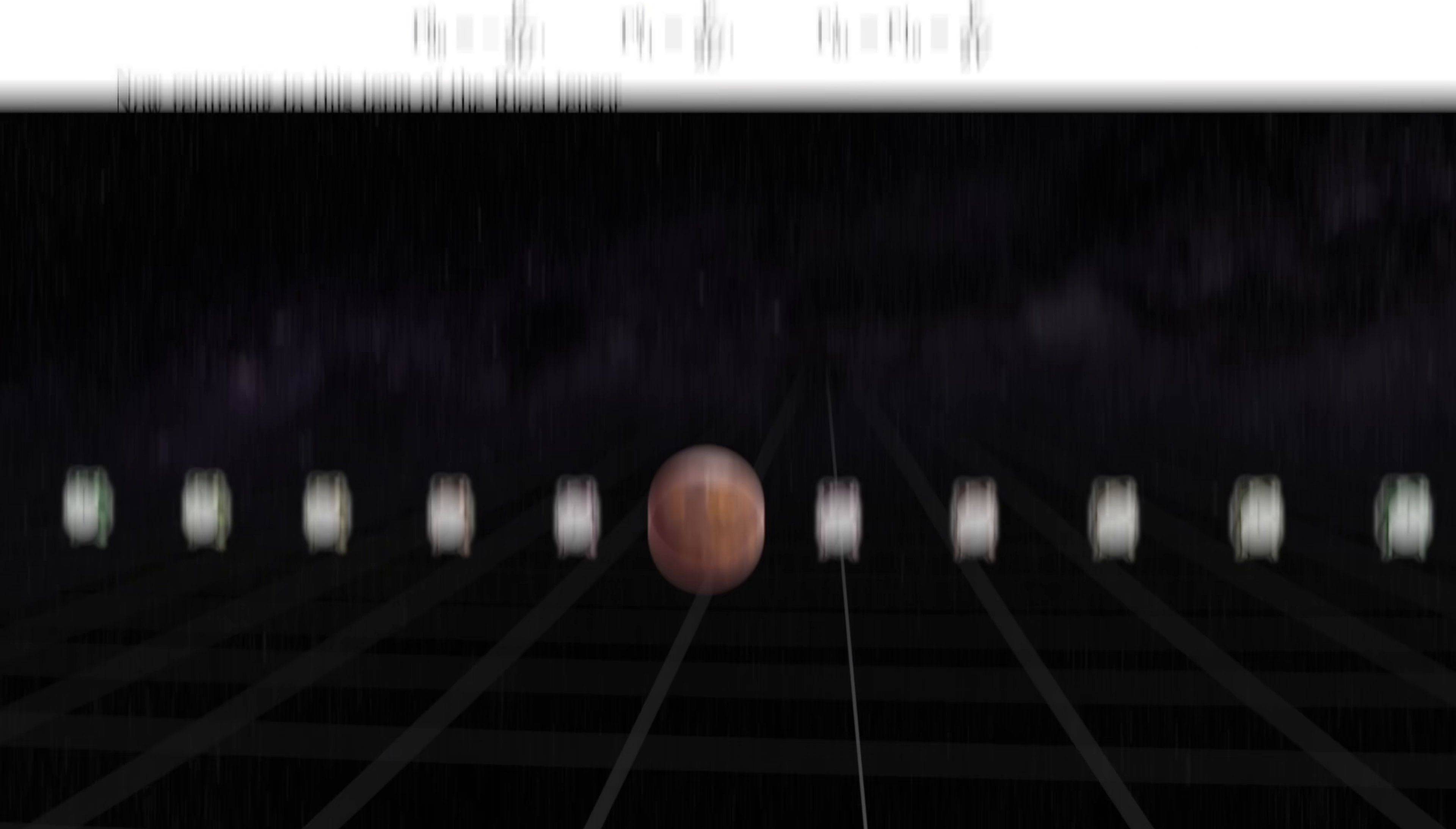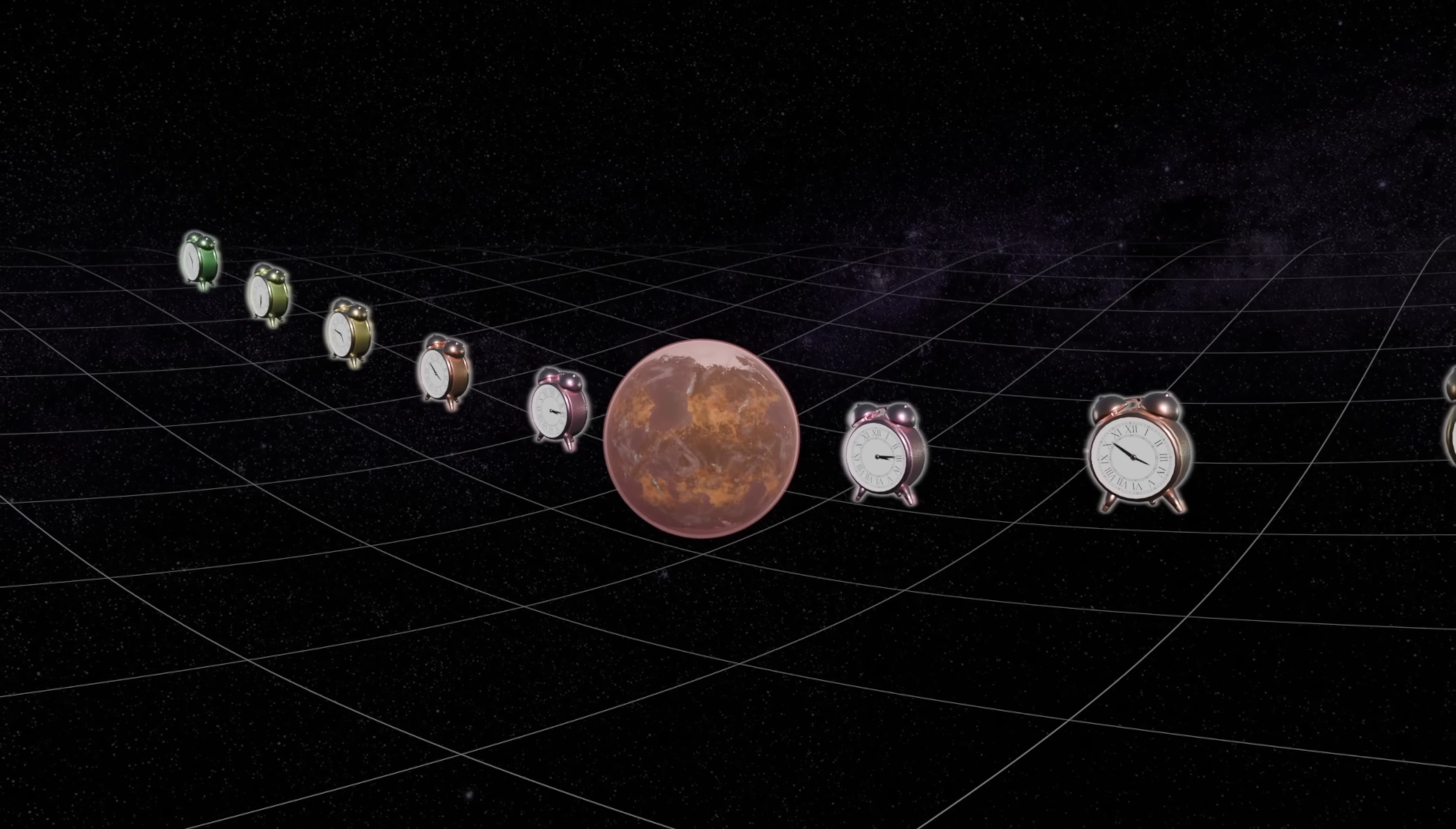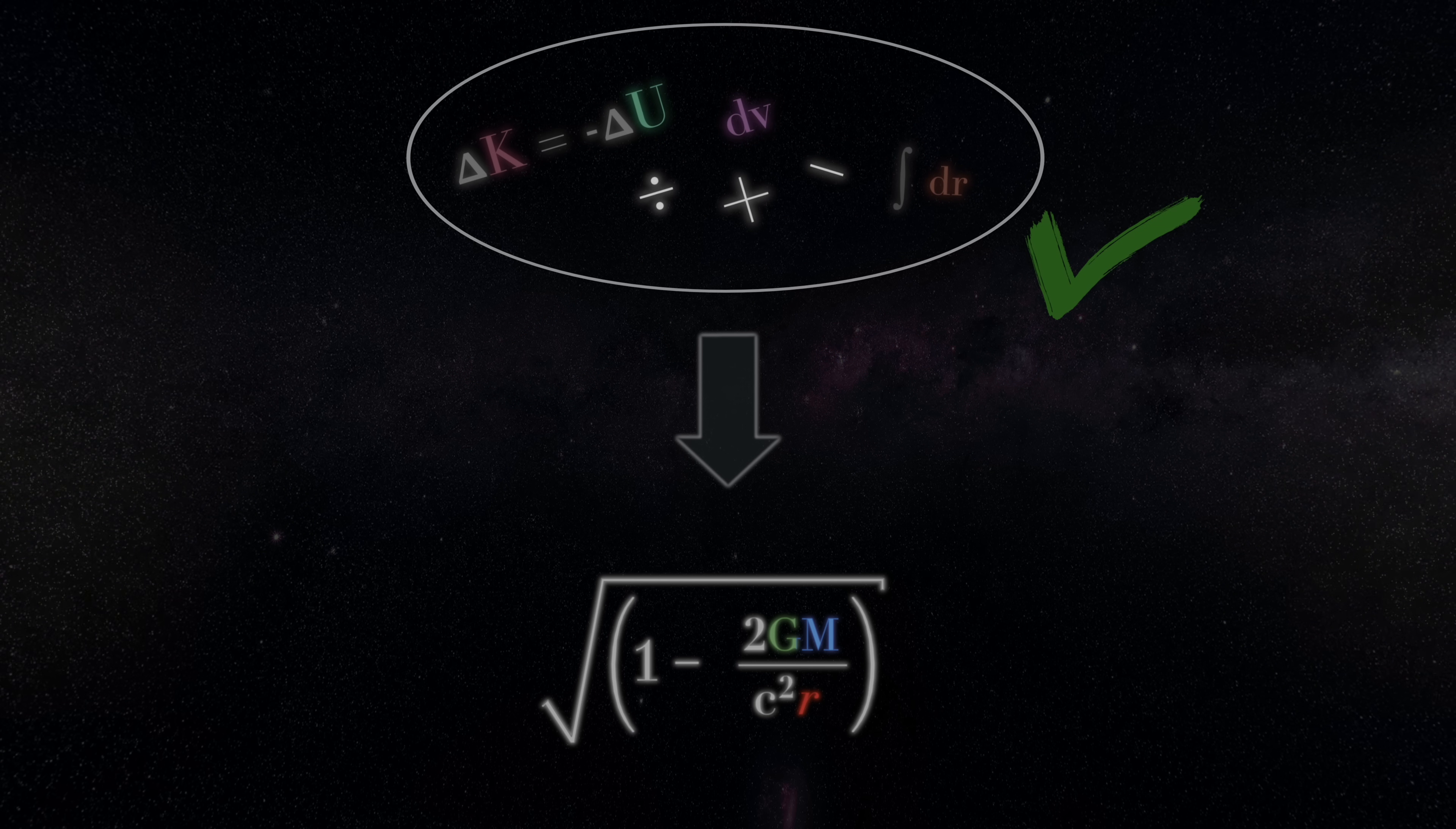So, it may seem that an understanding of where gravitational time dilation comes from is hopelessly out of reach to the ordinary layperson. Well, don't give up hope just yet. Because this expression can be derived in about five minutes without any reference to Einstein's equation, using rather just basic high school math and some solid physical intuition.